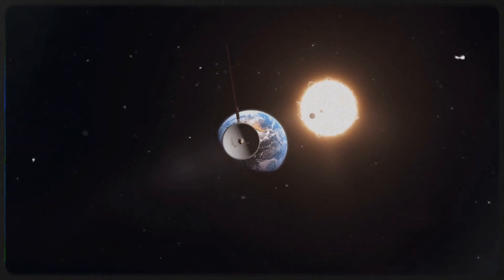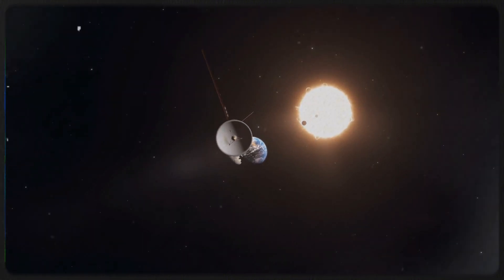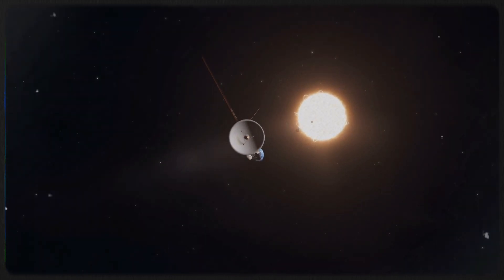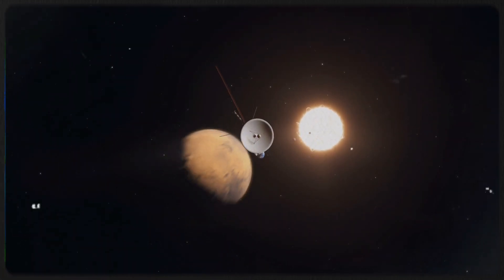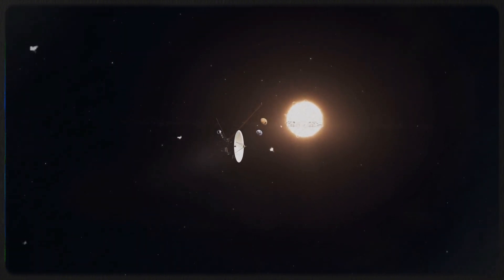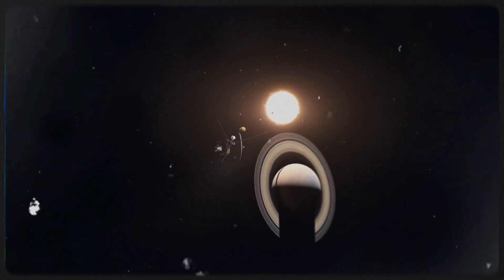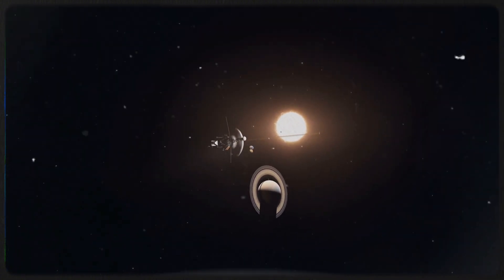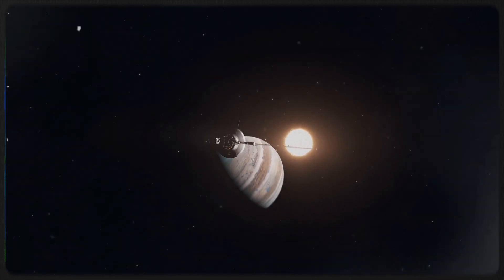To take advantage of this unique opportunity, a spacecraft needed to be launched by the mid-1970s. NASA seized this chance by designing two spacecraft specifically for this mission. Voyager 1 and Voyager 2, identical in design, were launched just 15 days apart in the summer of 1977.